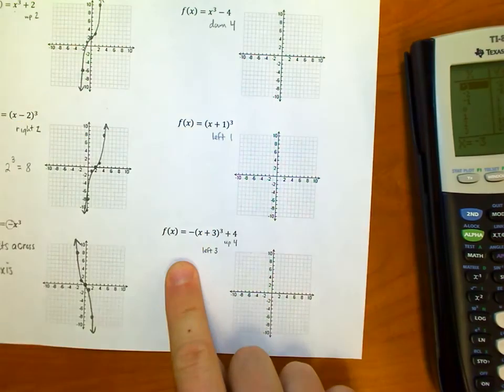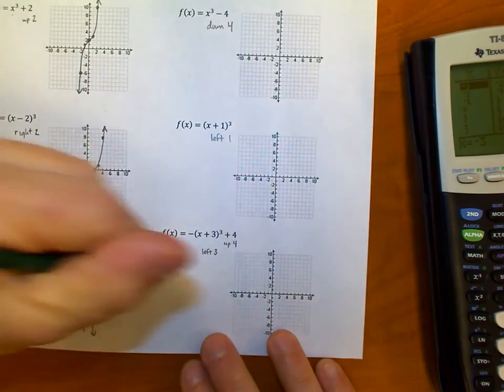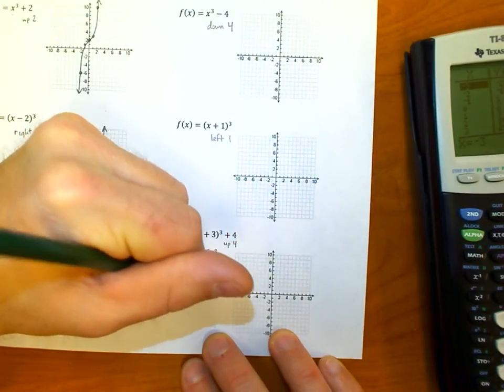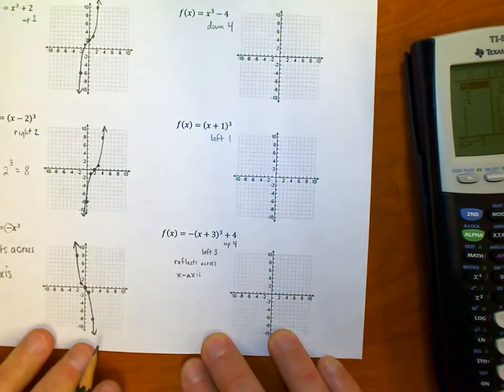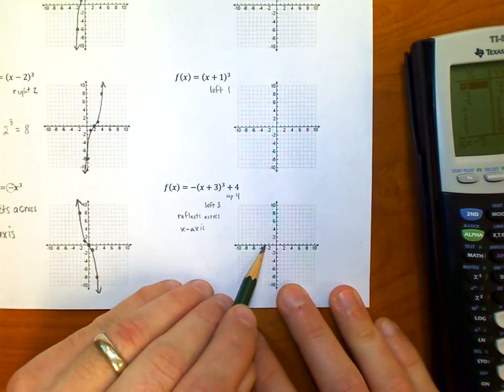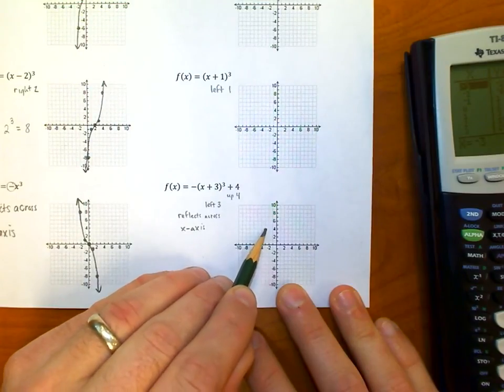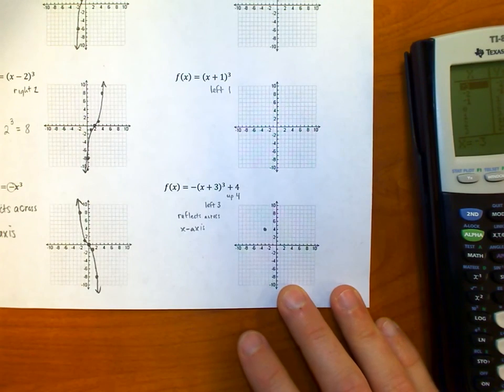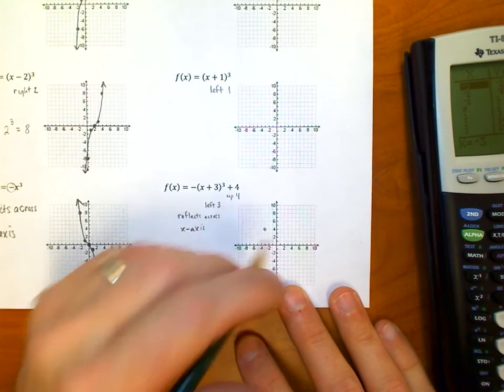And the negative sign out in the front flips it upside down, which we say reflects across the x-axis. So it'd be very simple for me to just say, you know what, I need to go left three and I need to go up four. There's my center point, that's the equivalent of my zero, the middle of my S-curve that I had earlier.